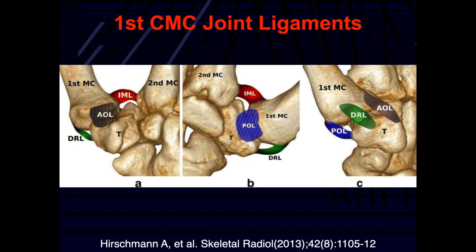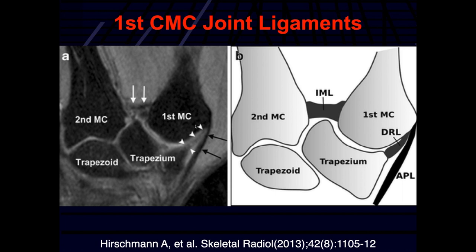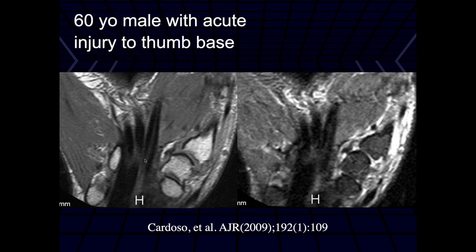All of you have commonly seen degenerative joint disease at this location on wrist MRs. Here's the anterior oblique and posterior oblique ligament on the sagittal views — it's really just part of the capsule. We can see these on fat-suppressed sequences along with the intermetatarsal ligament and DRL. The typical degenerative disease findings are loss of articular cartilage, subchondral cystic changes, and degranulation patterns like we see in other areas of degenerative disease.